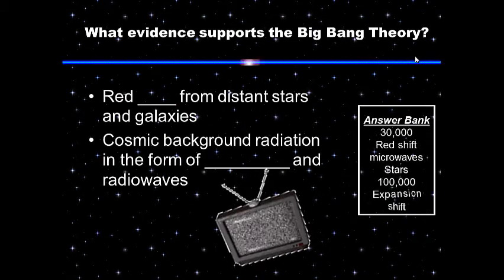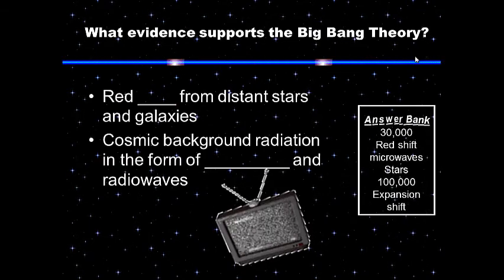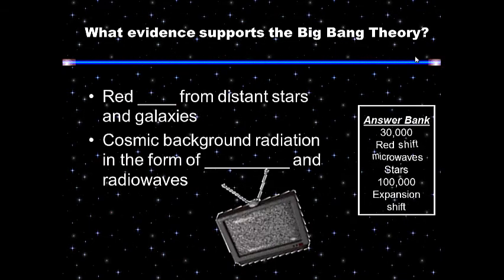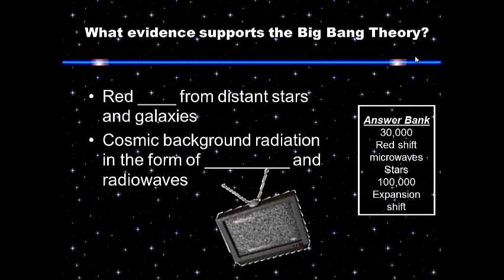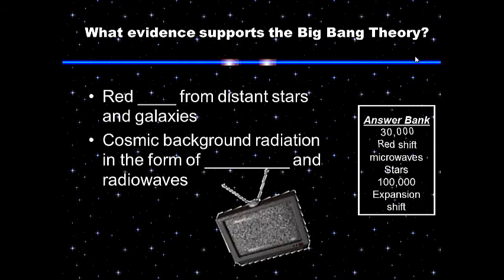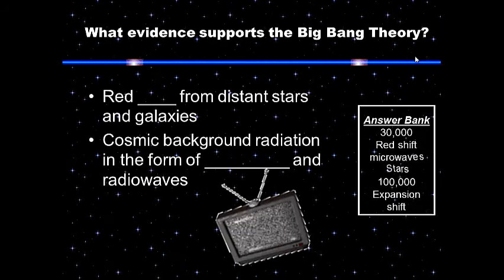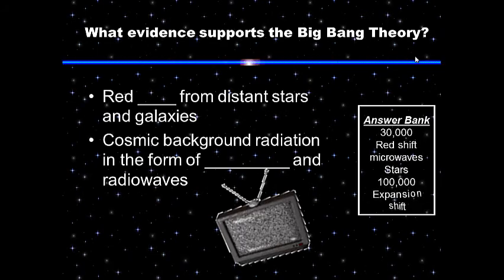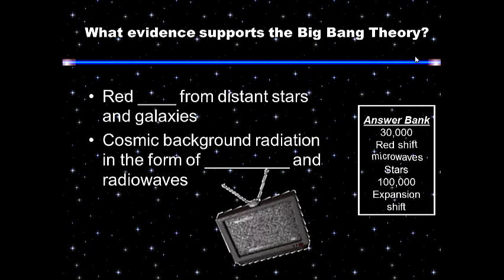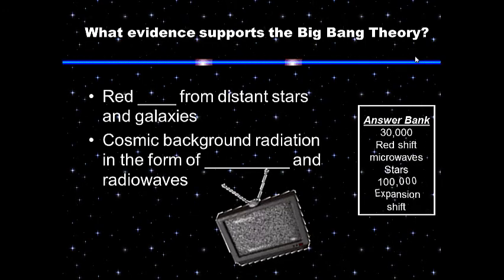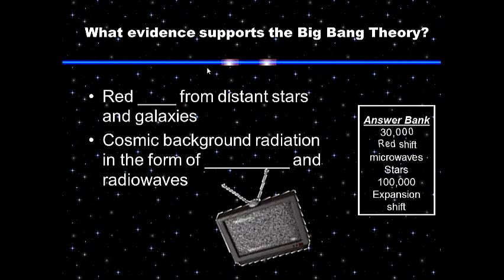These microwaves and radio waves make up the background radiation scientists have detected drifting through space, left over from the Big Bang. So: what evidence supports the Big Bang Theory? Redshift from distant stars and galaxies, and cosmic background radiation in the form of microwaves and radio waves. Get this down for your notes.